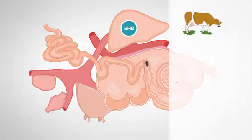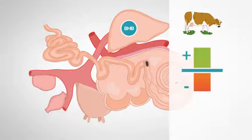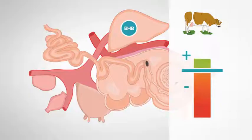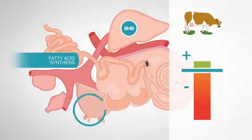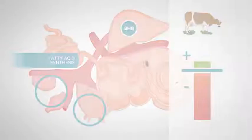Beta-hydroxybutyrate is a ketone body that can also come from the mobilisation of body fat when the dairy cow is in a state of negative energy balance. The ketones are used by the dairy cow as a source of energy. They are also used for fatty acid synthesis in the mammary gland and adipose tissue, and for muscle growth.